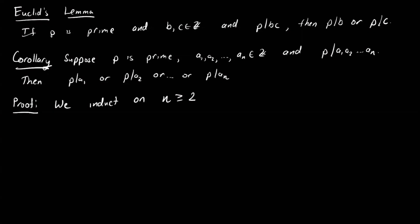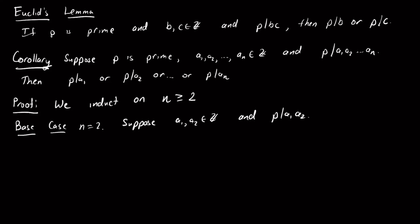We prove this corollary by induction on n, for n ≥ 2. The base case n = 2: suppose p divides a₁·a₂. By Euclid's Lemma, p divides a₁ or p divides a₂. So the base case is immediate from Euclid's Lemma.